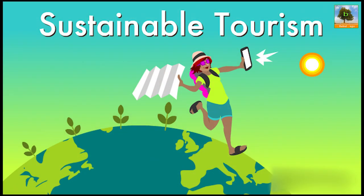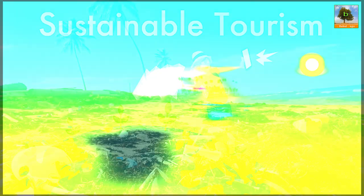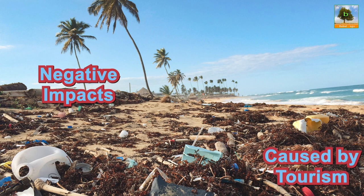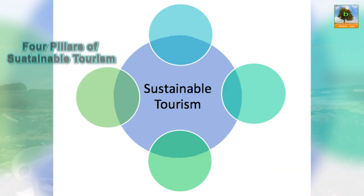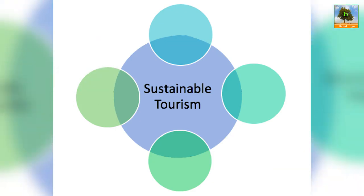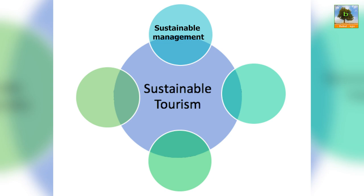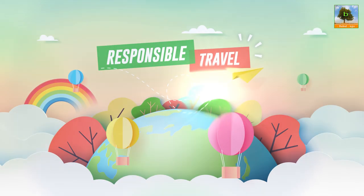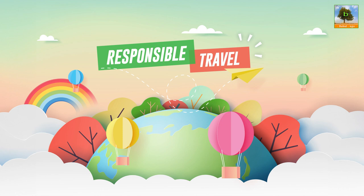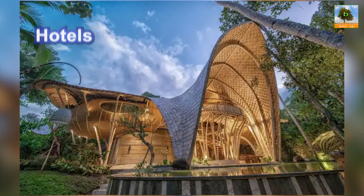The aim of sustainable tourism is to increase the benefits and to reduce the negative impacts caused by tourism. The four pillars of sustainable tourism are: sustainable management, socio-economic impacts, cultural impacts and environmental impacts.